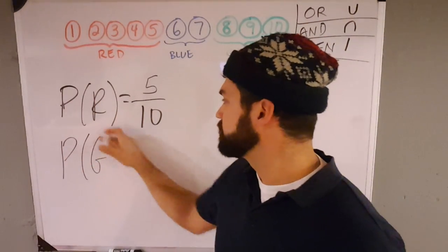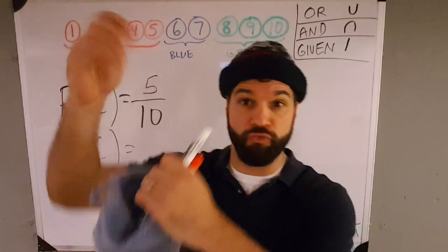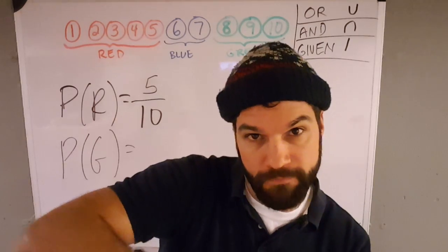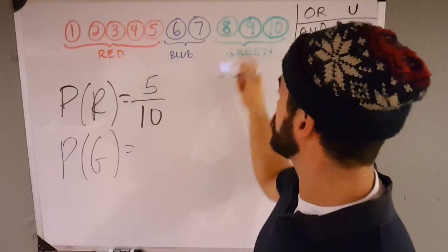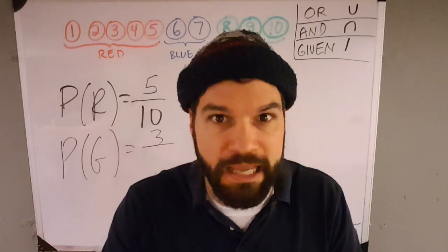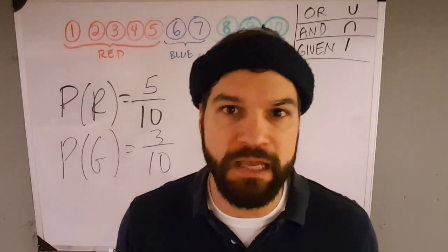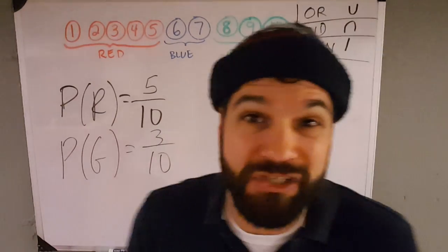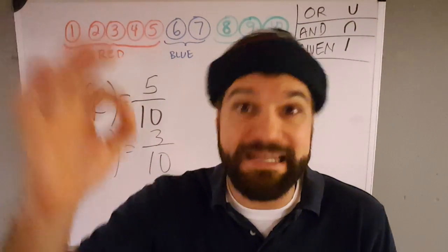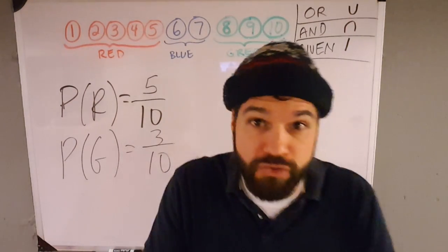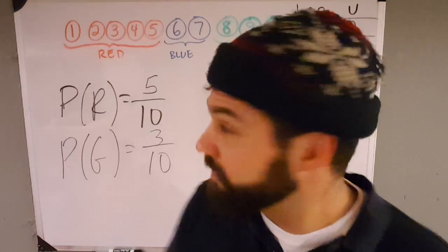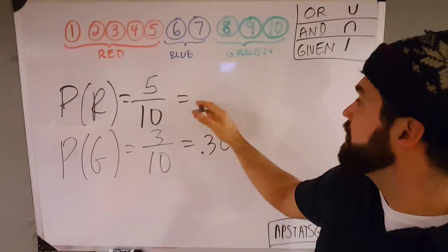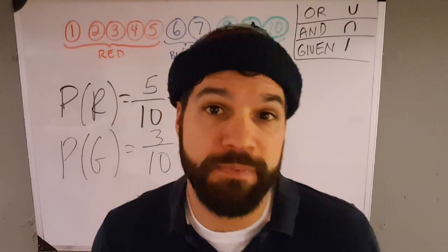What's the probability I pull out a green? Let's put that red back in and shake this up so all 10 are in here. There are only three greens, so three greens out of 10 in all would be three out of 10. We show probabilities as a fraction, but you can just do the calculation — three tenths is 0.3, which is 30%. Five tenths is half, a 50% chance.